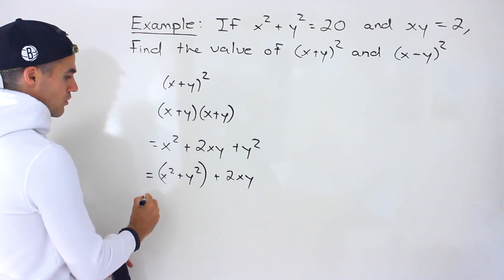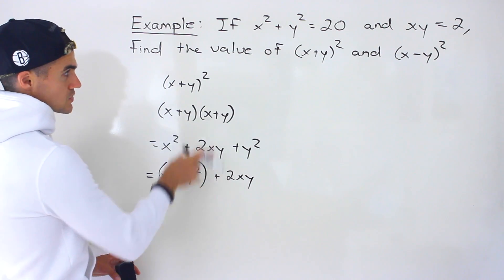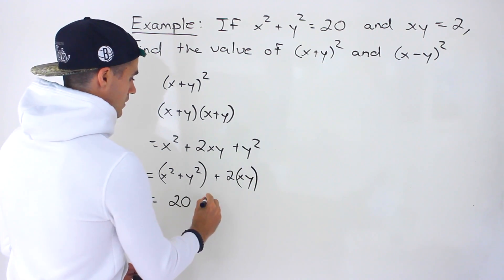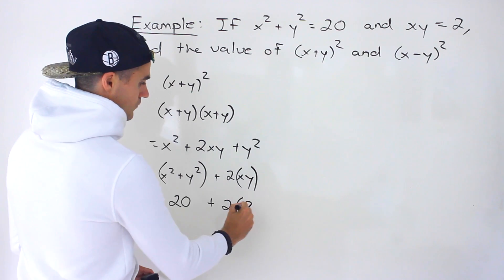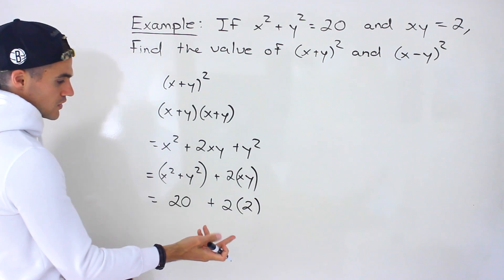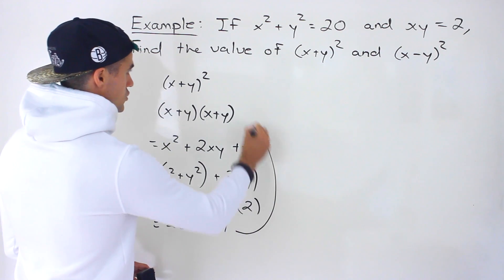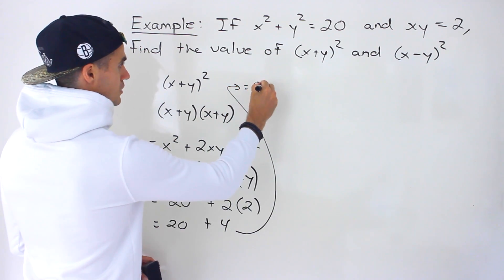Notice that x² + y² equals 20, and xy equals 2. We're multiplying by the 2 here, so we'd end up with 20 + 4, which gives us 24.